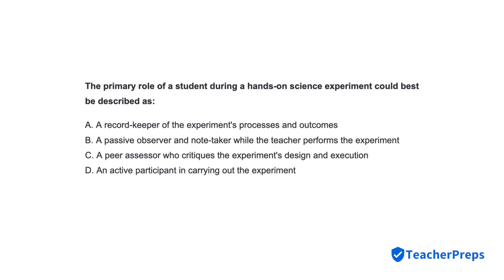The primary role of a student during a hands-on science experiment could best be described as? Correct response: Letter D — active participant in carrying out the experiment.